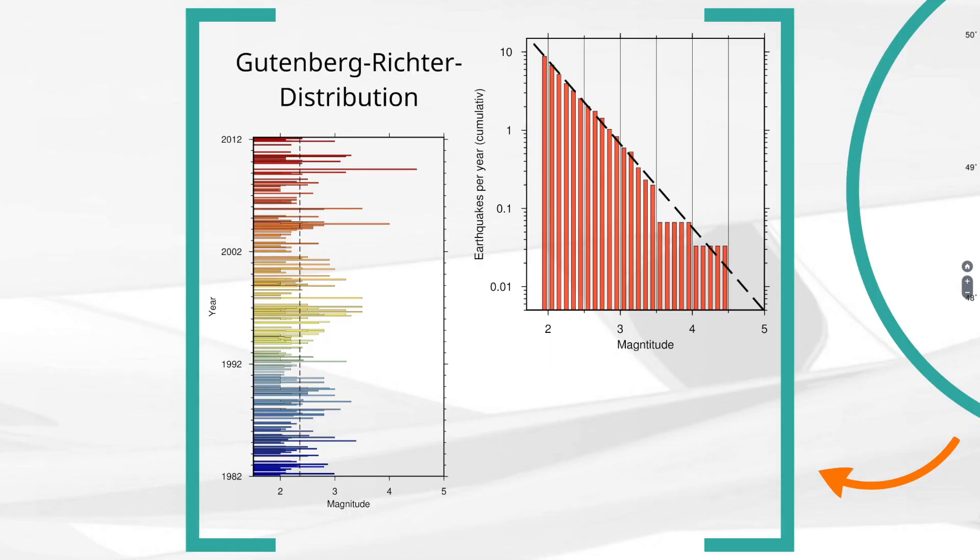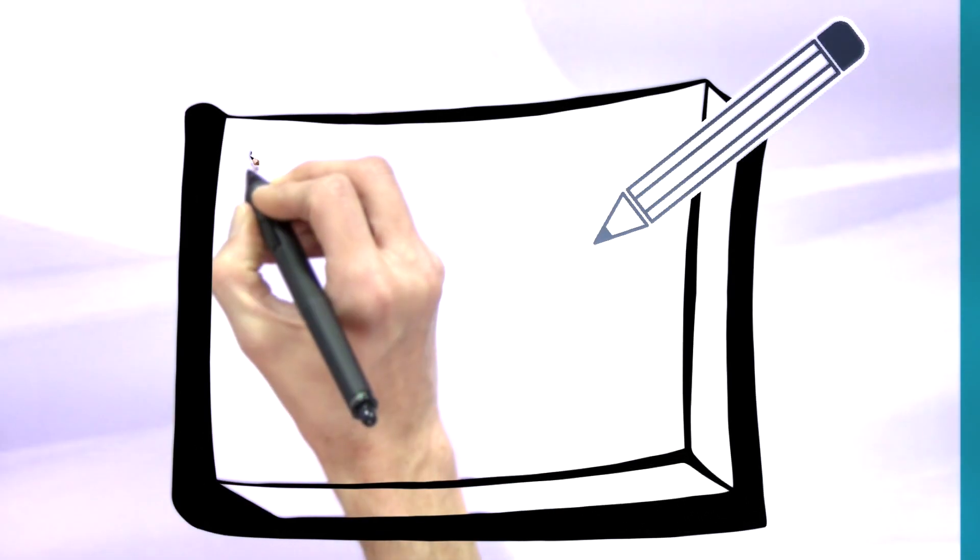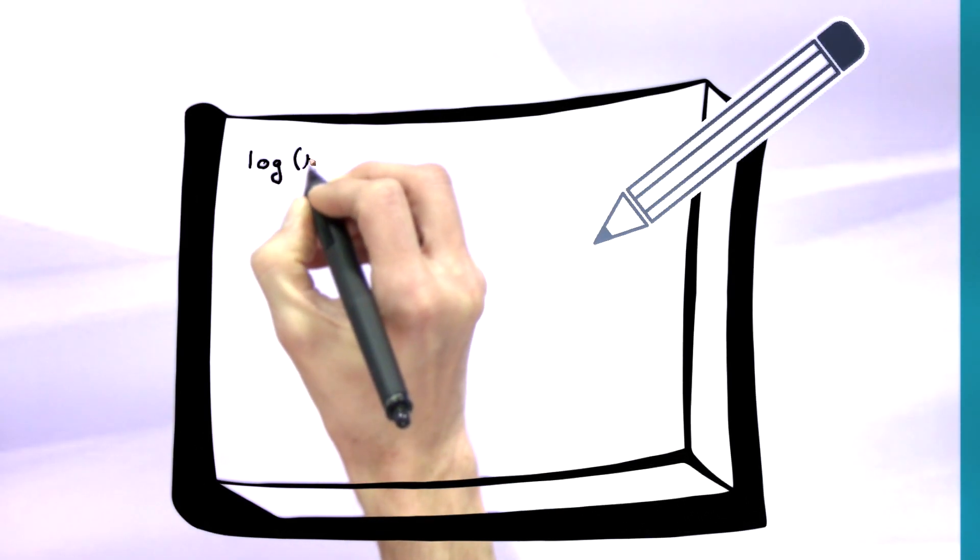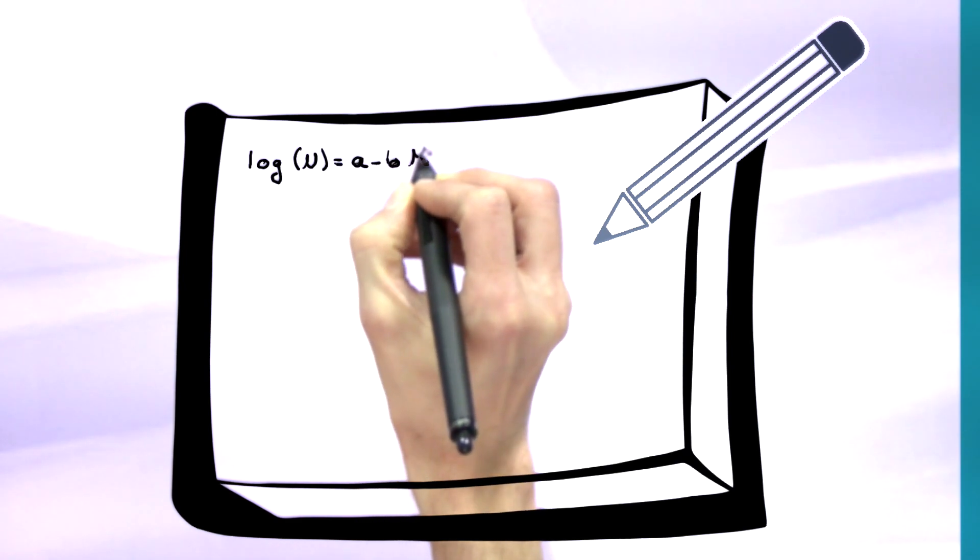The corresponding formula for this is the decadic logarithm of the number of quakes n equals a minus b times the magnitude m. Hence, the b-value is the negative line gradient and can be calculated using a maximum likelihood estimation.